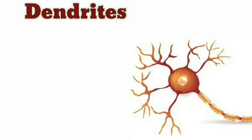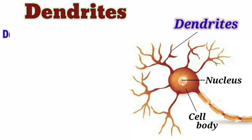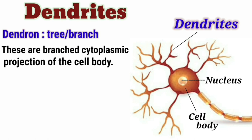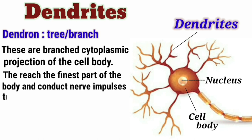The dendrites are structures coming out from the cell body in a branch-like form, which is why they are called cytoplasmic projections — they are formed from the cytoplasm. The structure is branch-like so that it can reach all parts of the body. It basically helps in the conduction of nerve impulses, conducting them towards the cyton. Dendrites are the main structures which receive the stimulus.